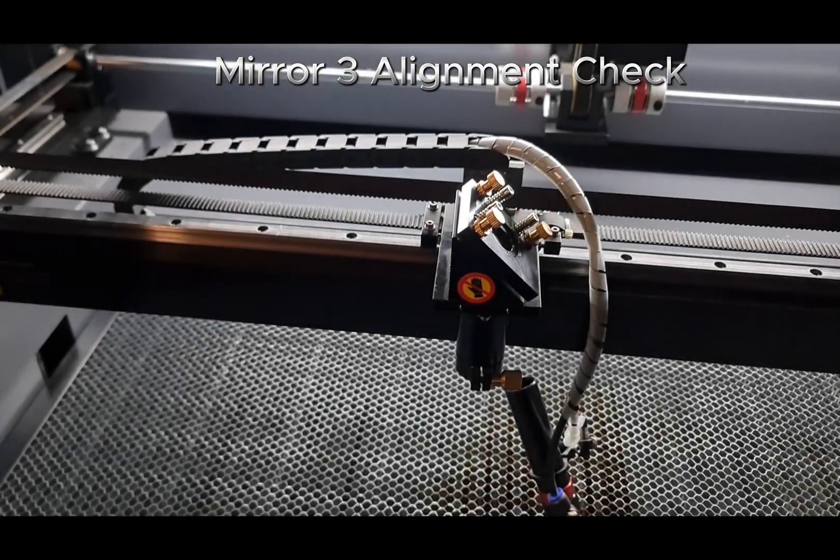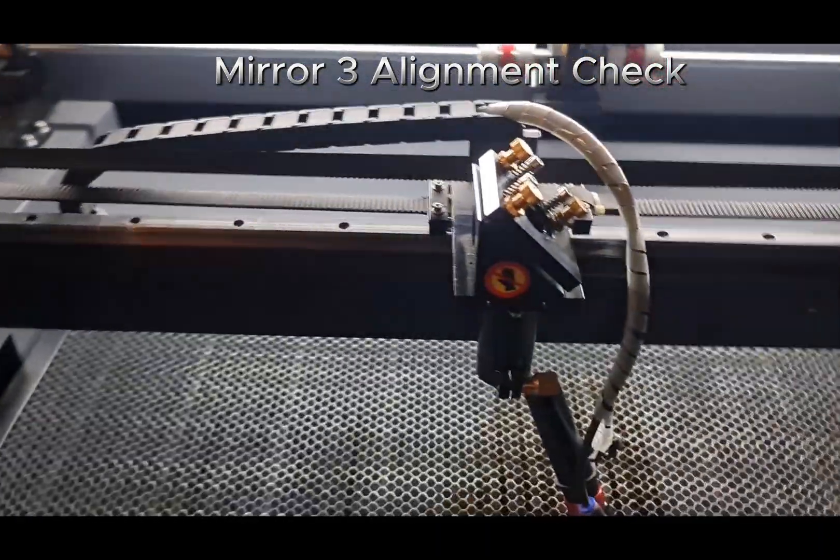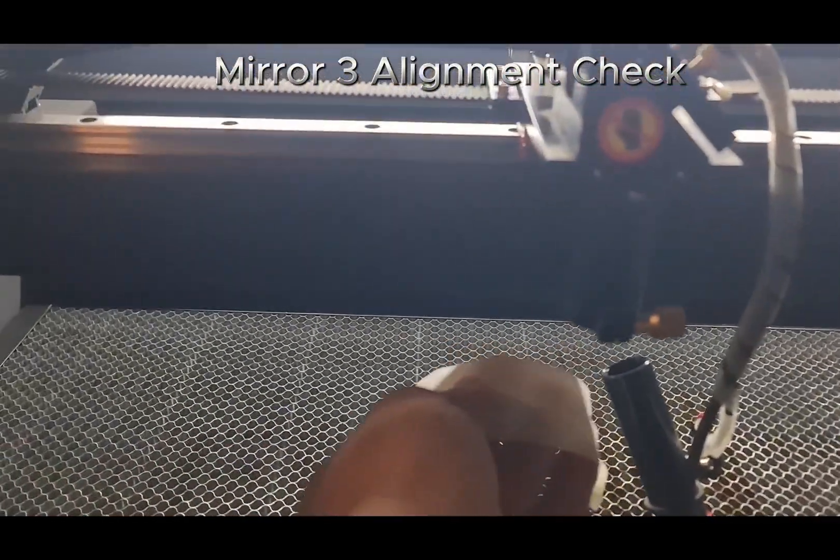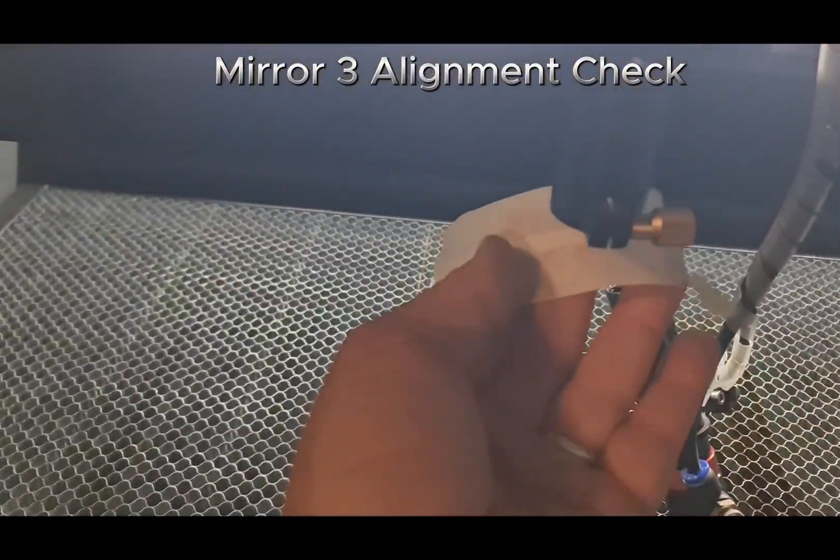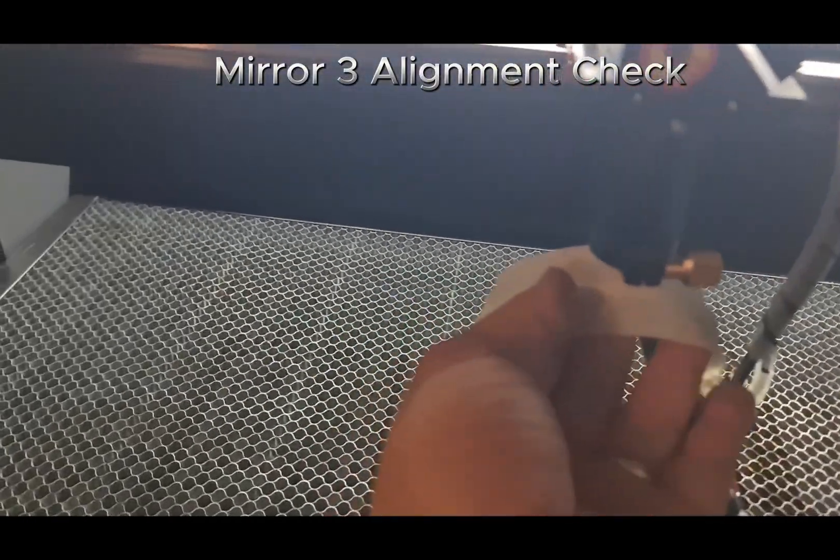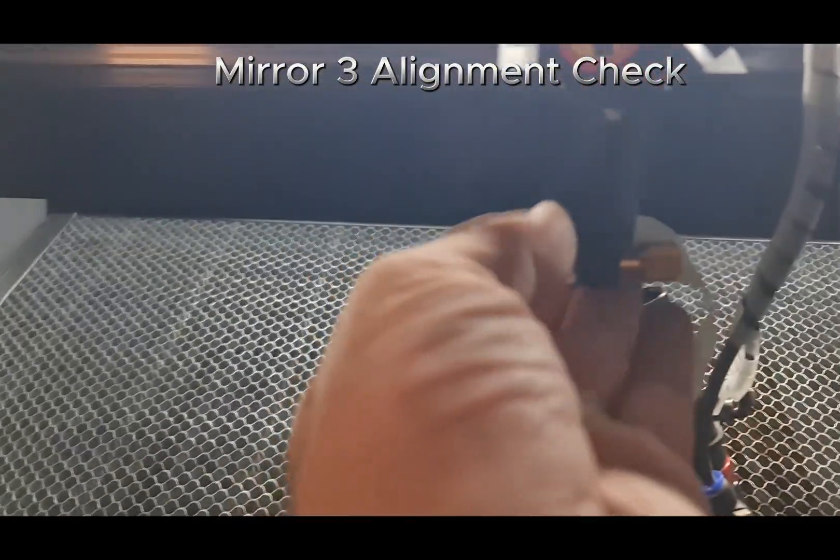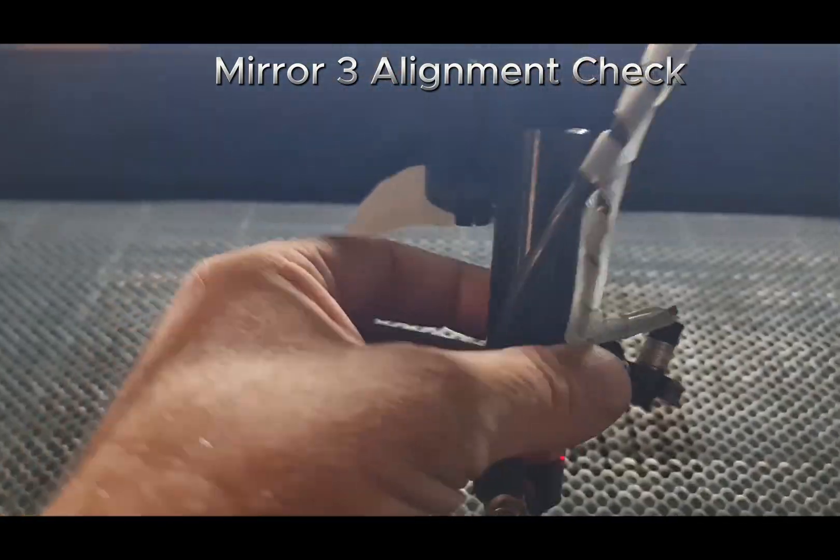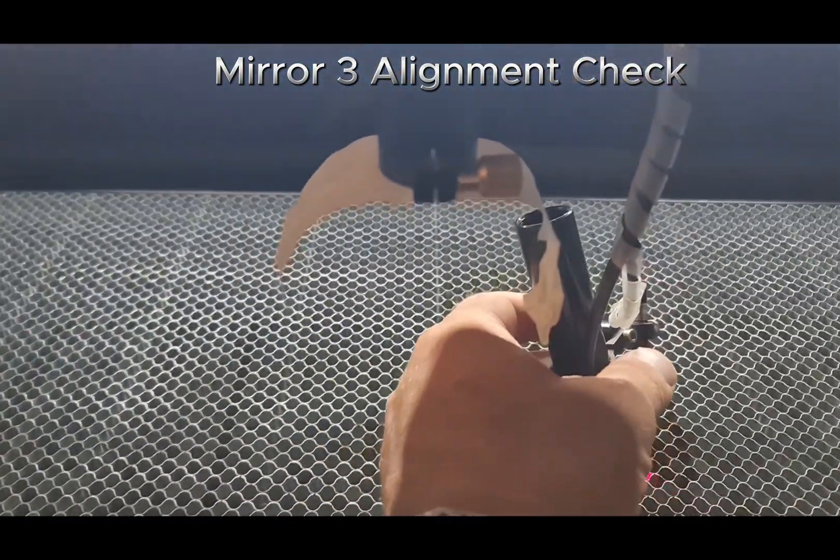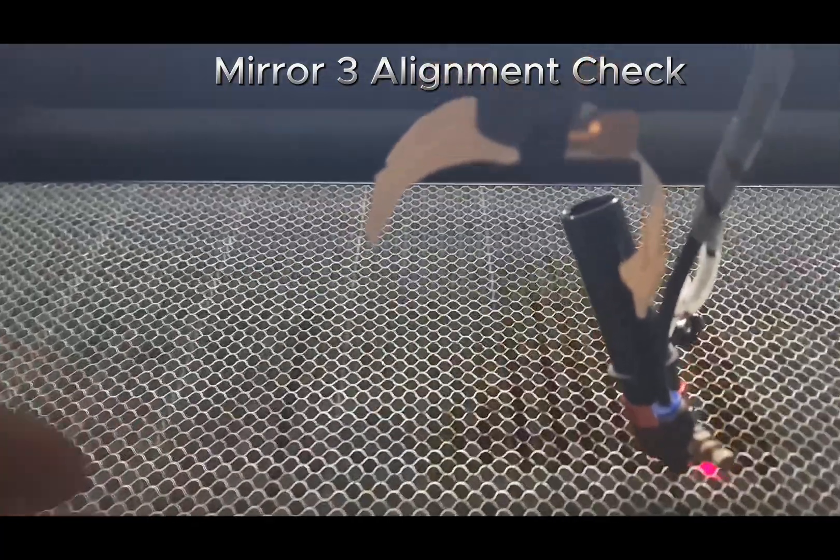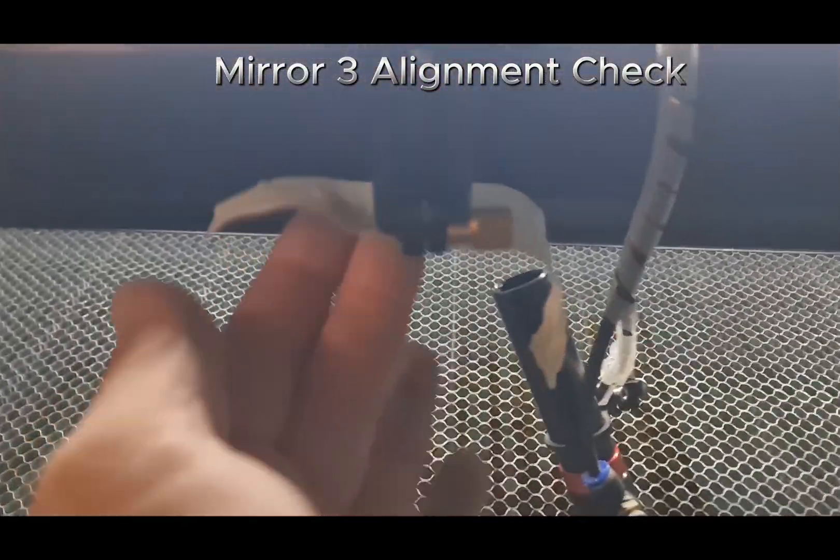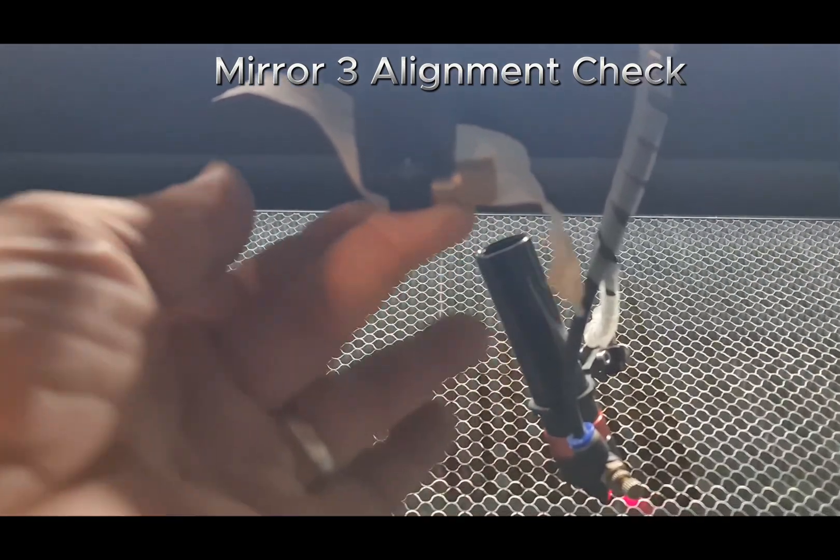Next up, mirror three alignment check. So we're going to remove the lens tube, just as I've done there. We're going to get some tape and put one layer masking tape. I haven't got two inch so I've just doubled it up so it'll fit across the bottom. Just remove that and set it to the side.